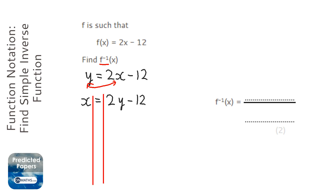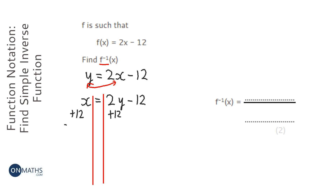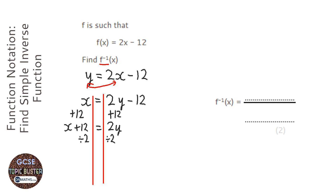So I'm going to add 12 to both sides first. That's x plus 12 equals 2y, and I'm going to divide both sides by 2. The way I do that is with a fraction.